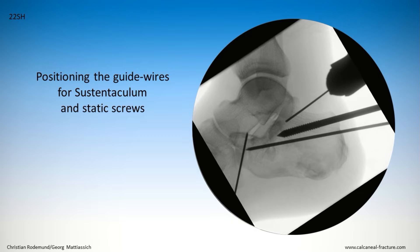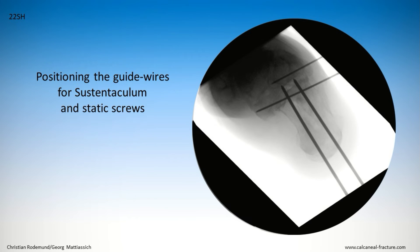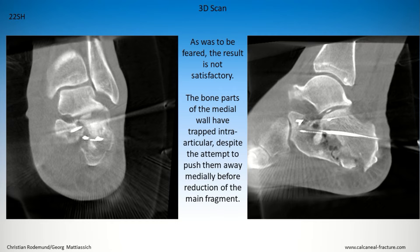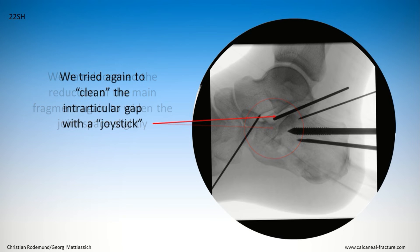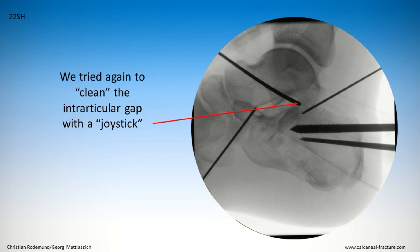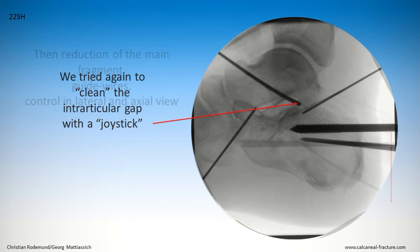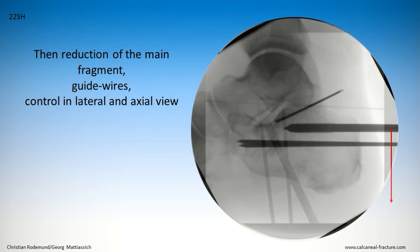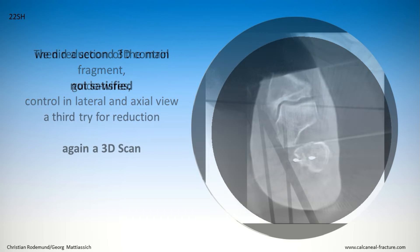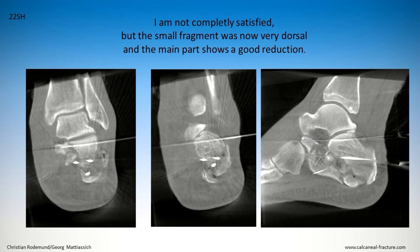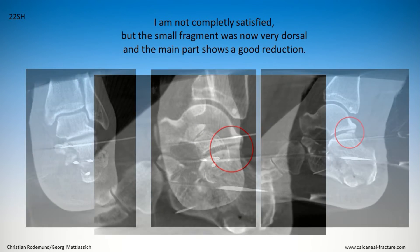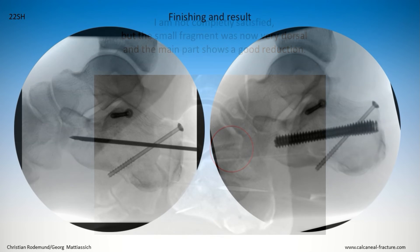The next step was positioning the guide wires for the sustentaculum and static screws. Then we performed a 3D scan. As was to be feared, the result was not satisfying — the fragments of the medial wall were trapped intra-articularly despite the attempt to push them away. We loosened the reduction again to widen the joint space slightly and tried to clean the intra-articular gap with the joystick. Then reduction of the main fragment, guide wires, and controlling lateral and axial view. We did a second 3D control — not happy — then a next try and a third 3D examination. We were not completely satisfied, but the small fragment was now at the very edge of the joint and the main fragment was well reduced.